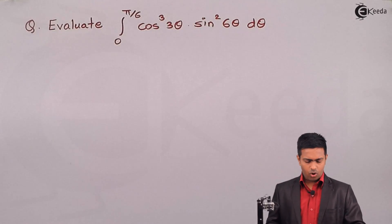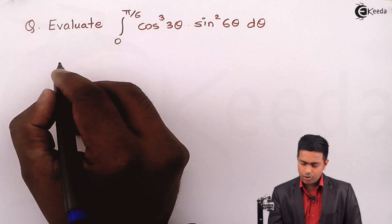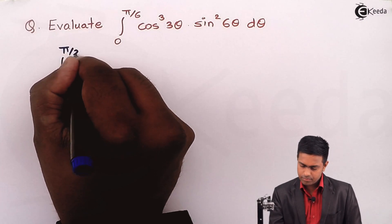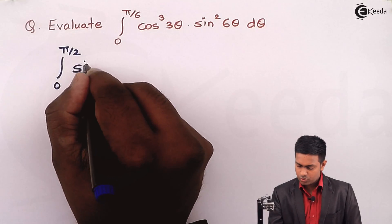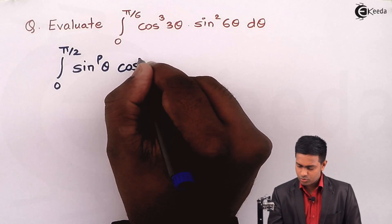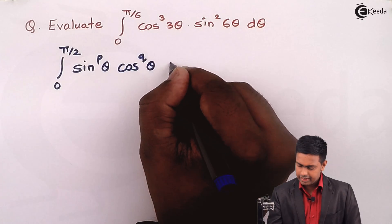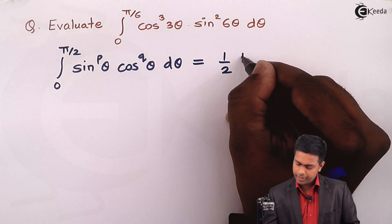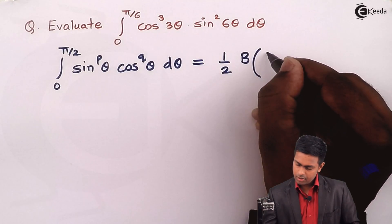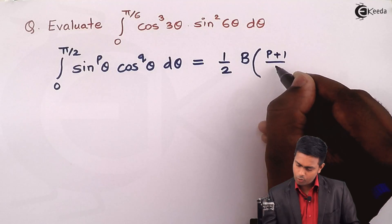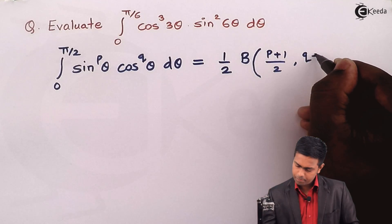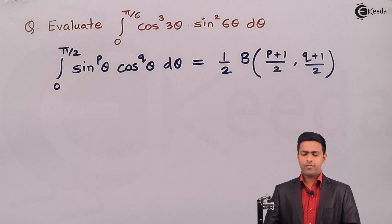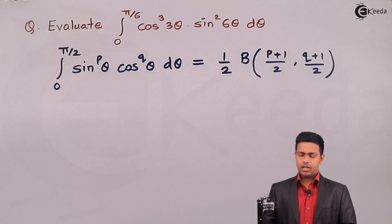The definition of beta function states that the integration from 0 to π/2 of sin^p(θ) · cos^q(θ) dθ is given by the formula (1/2) · β((p+1)/2, (q+1)/2). This is the definition of beta function we will use.